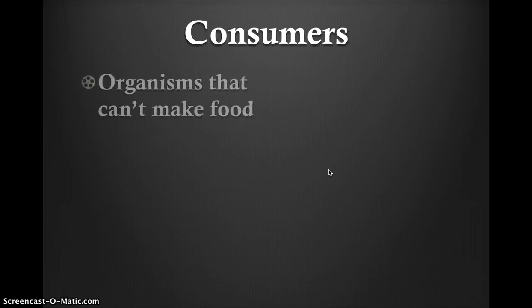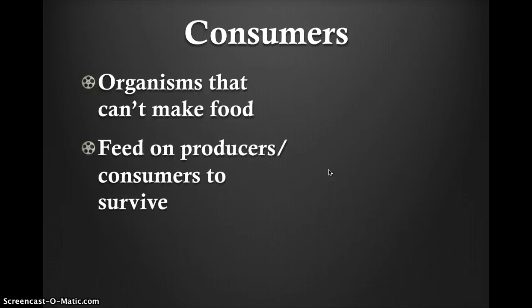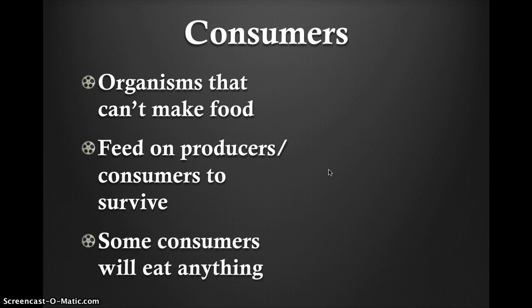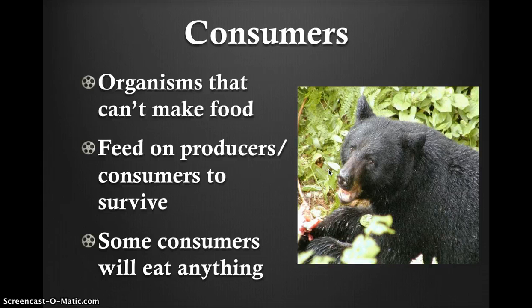Consumers are any organism that eats another organism. Several types of consumers exist, which we will get to shortly. Consumers need to eat other living things in order to have enough energy to survive or reproduce. Consumers, including humans, get their energy from producers regarding the flow of energy through an ecosystem. Consumers dominate most of the food chain, as there are several different types of consumers that overtake producers. A bear is an example of a consumer.